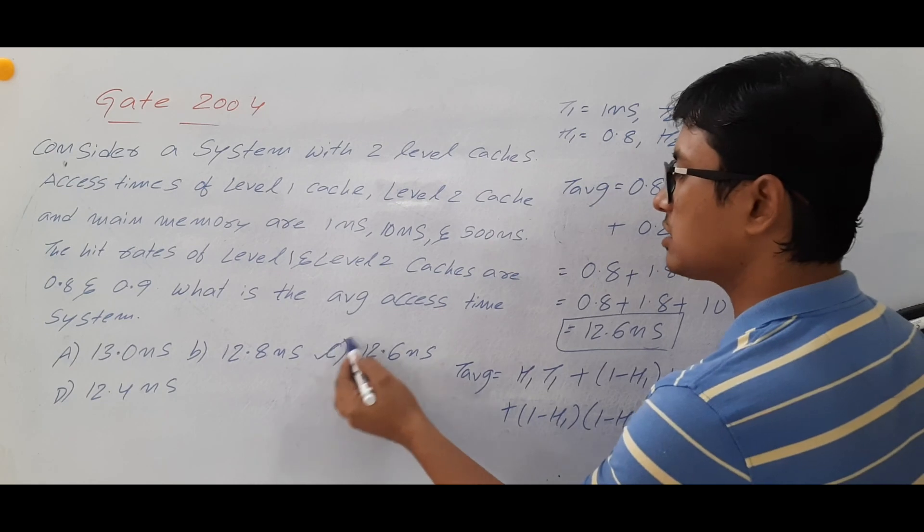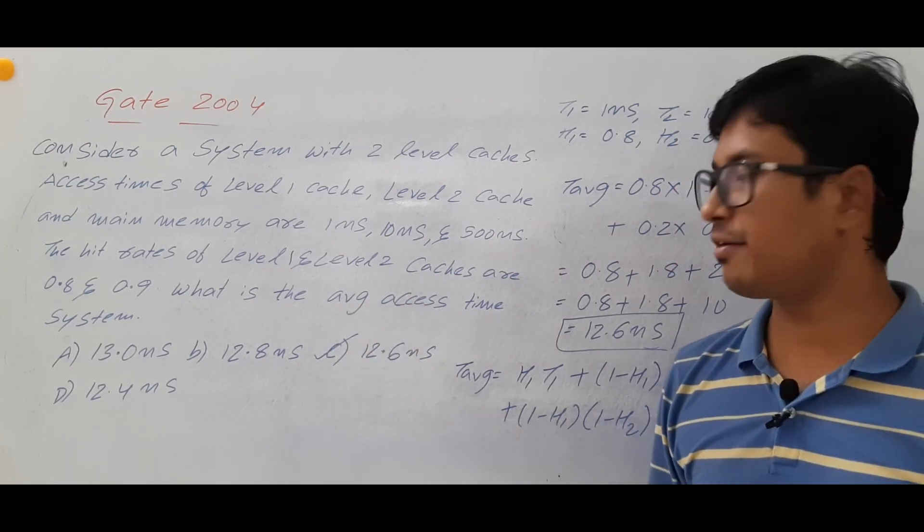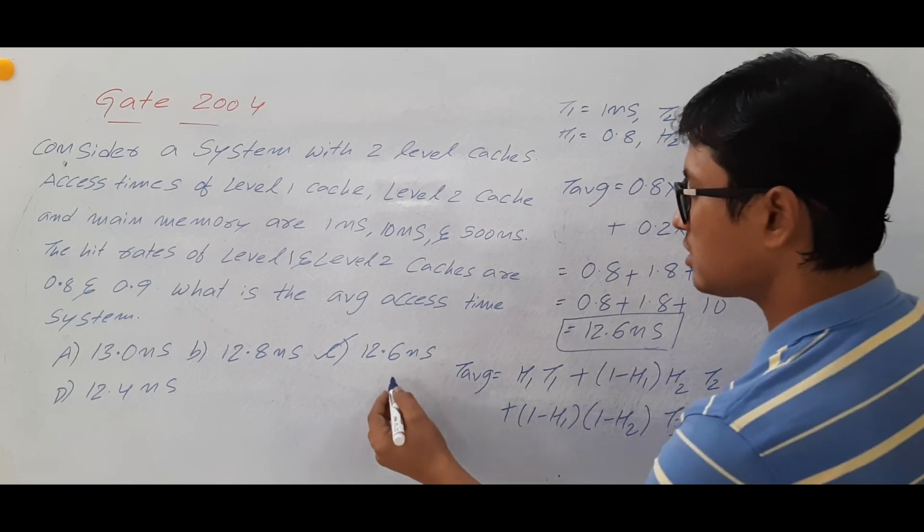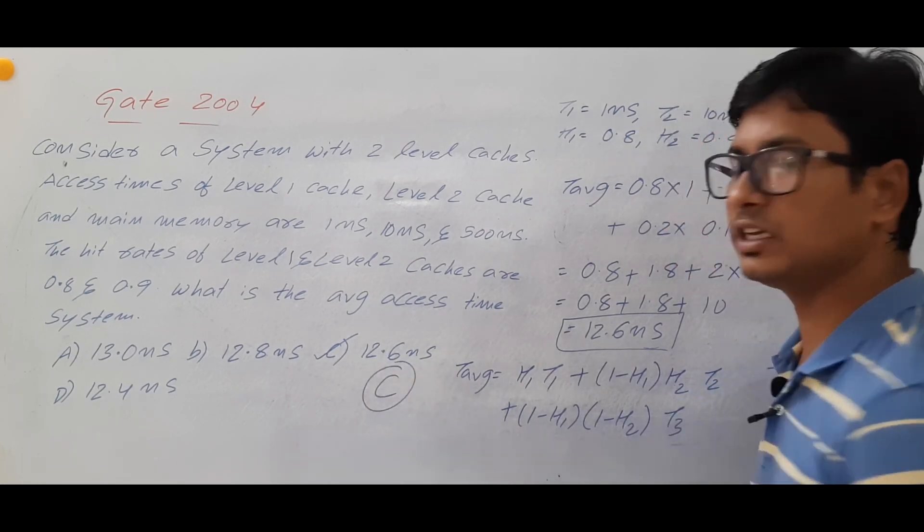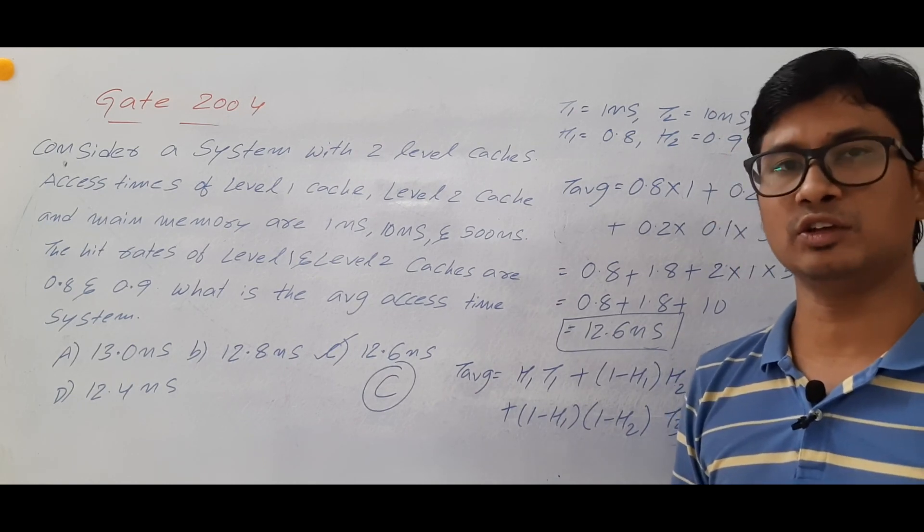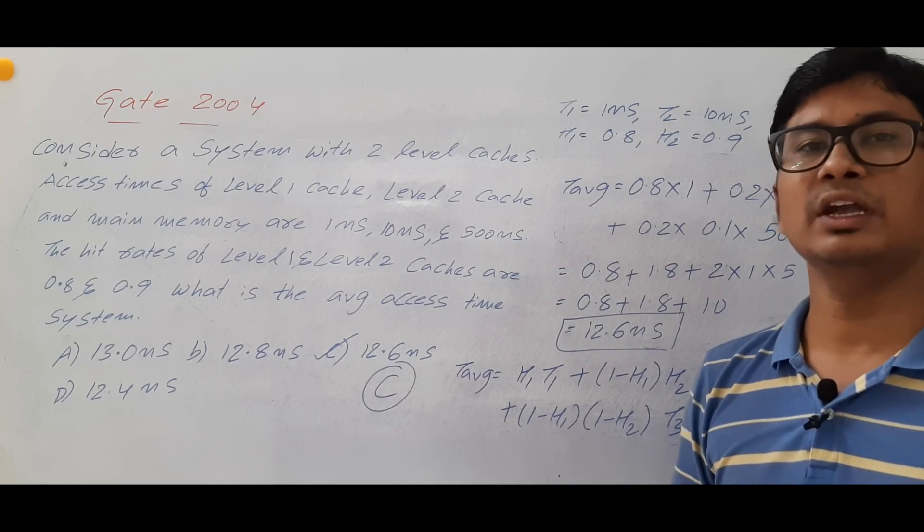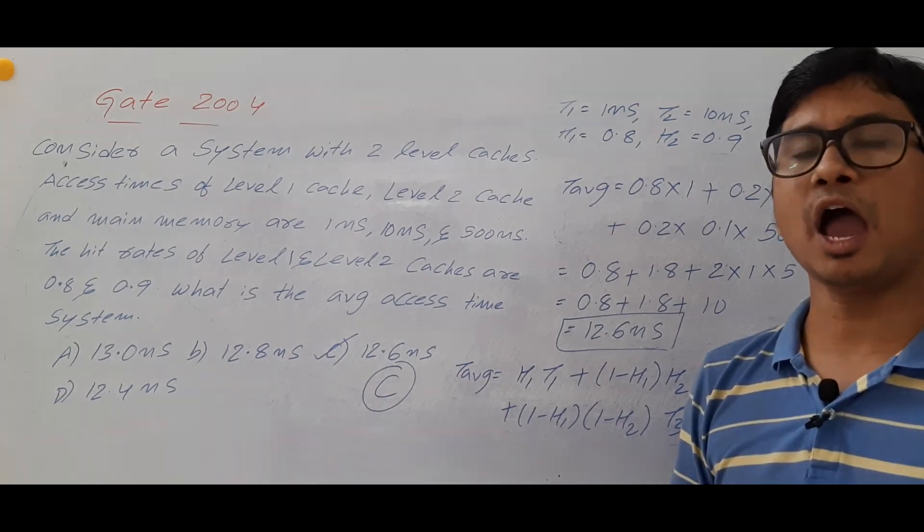So this is the right answer for this question. 12.6 nanoseconds is the average access time. So the right answer for this question is option C. If you have any doubts related to this question feel free to ask it in the comment session. I will clear your doubts in less than 24 hours. Thank you for watching my video. Have a nice day.